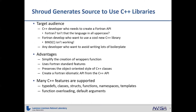Shroud generates source files to wrap a C++ library. Who would want to use this? One target audience is C++ developers whose manager comes in and tells them they need to write a Fortran API — and their response is 'yes, I've heard of Fortran, that's the language in all uppercase' — certainly not familiar with modern Fortran. Or there's some Fortran developer who sees a cool new C++ library they want to use and finds that bind(C) isn't working like they think it should. Or any developer who knows the details but knows there's a lot of boilerplate involved.